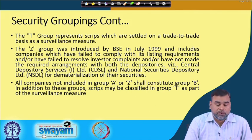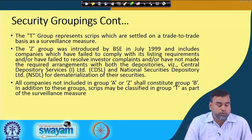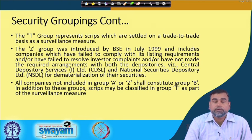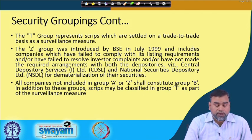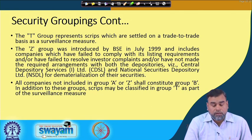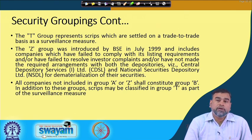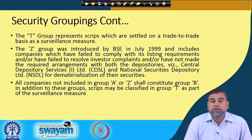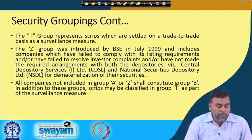The Z category was introduced on the BSE in July 1999. These are stocks issued by companies that have failed to comply with their listing requirements, failed to resolve investor complaints, and have not made the required arrangements with depositories — either CSDL or NSDL — for dematerialization of securities. Investor grievances are not being addressed, listing requirements are not being fulfilled, and the stocks have not been converted to dematerialized form. Those companies' stocks are considered Z-category stocks.